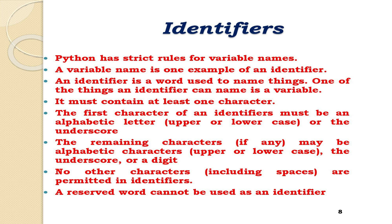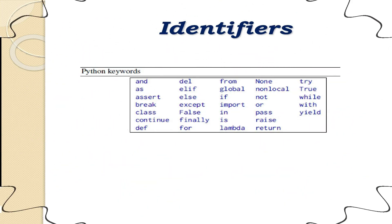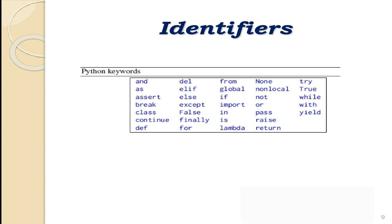We will discuss identifiers such as functions, classes and methods. Identifiers have the following form: an identifier must contain at least one character. The first character of an identifier must be an alphabetic letter (upper or lowercase) or underscore. The remaining characters, if any, may be alphabetic characters (upper or lowercase), underscores or digits. No other characters including spaces are permitted in identifiers. A reserved word cannot be used as an identifier in Python programming.